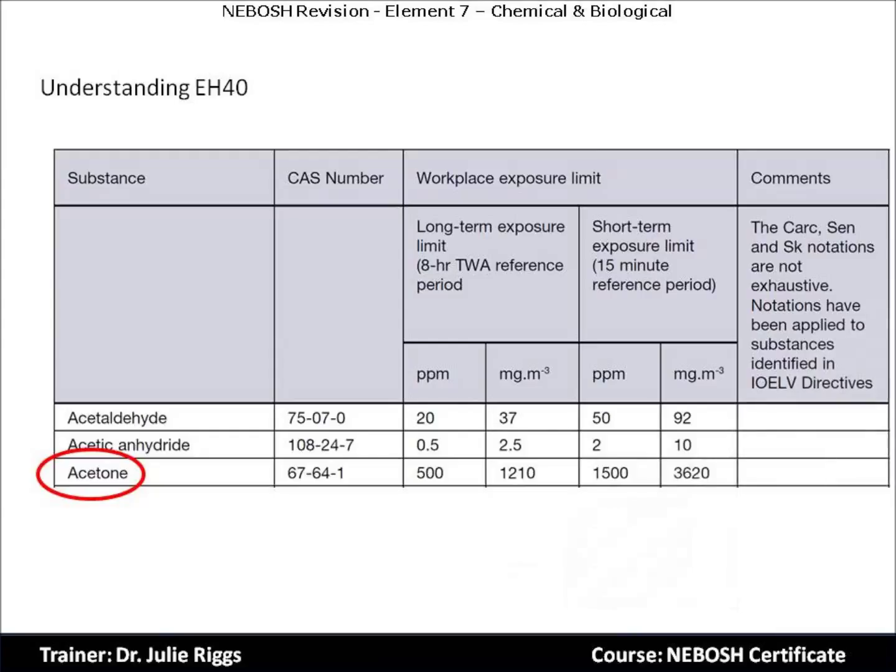For the purpose of this video, we are going to explore one element within the EH40 publication. I am using the 2nd edition 2011 publication, and I have chosen acetone on page 11. Acetone is a substance many people are familiar with — it is found in solvents, thinners, paints, varnishes, nail polish remover, and glue.